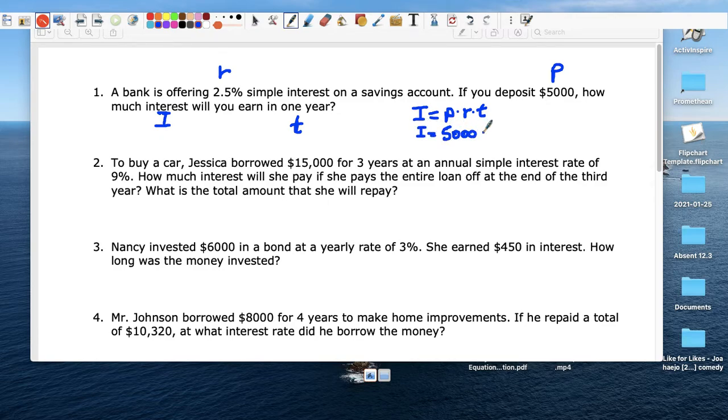So the interest equals P, which is 5,000, times R, which is 2.5. But remember, 2.5%, we have to change it, right? So the decimal moves 1, 2 times. So we change it, move 2 times, so we put a 0 here. And here's the new decimal. So it becomes 0.025. So the rate R is 0.025.